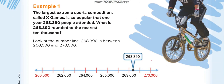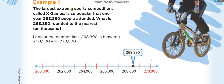Here is the first example. The largest extreme sports competition called X Games is so popular that one year, two hundred sixty-eight thousand three hundred and ninety people attended. The question is: what is 268,390 rounded to the nearest ten thousand? Remember, before the comma we read the number separately, then say the name of the period — so two hundred sixty-eight thousand, three hundred and ninety.